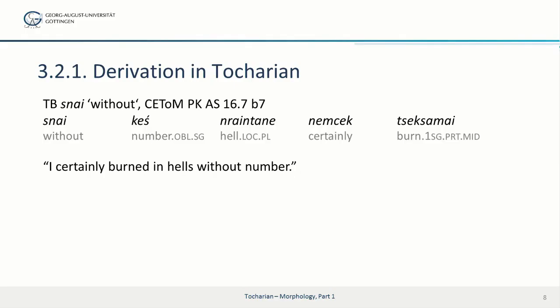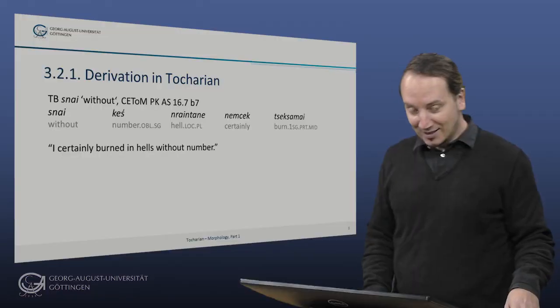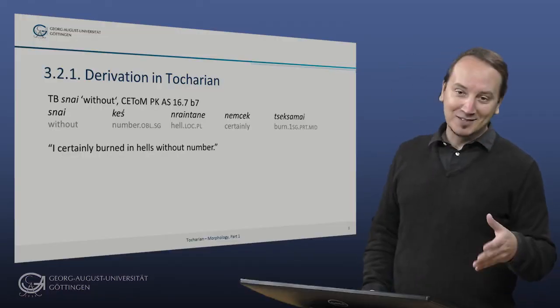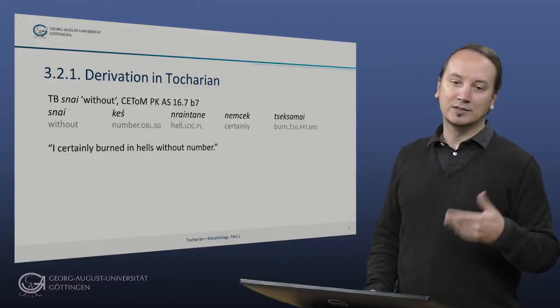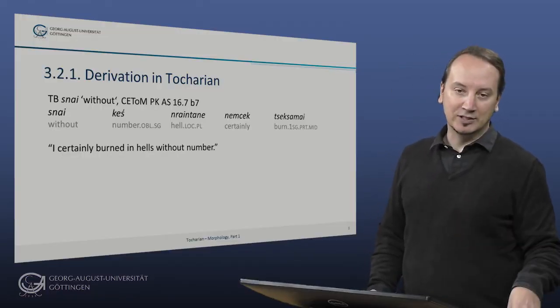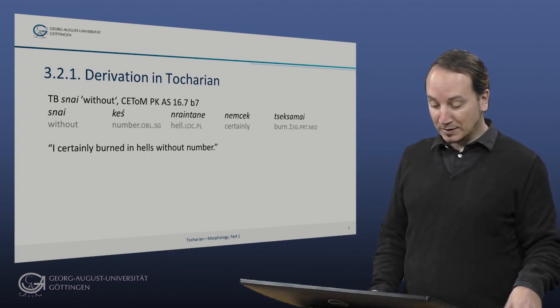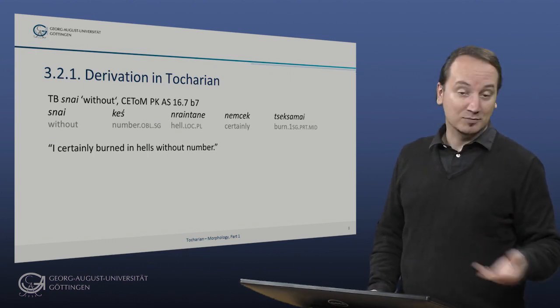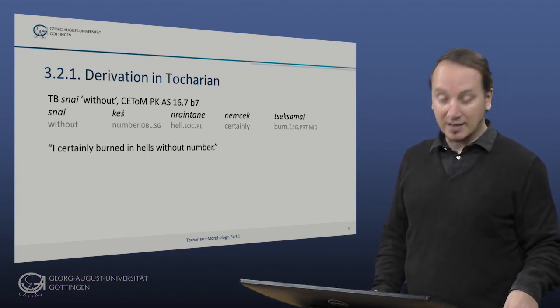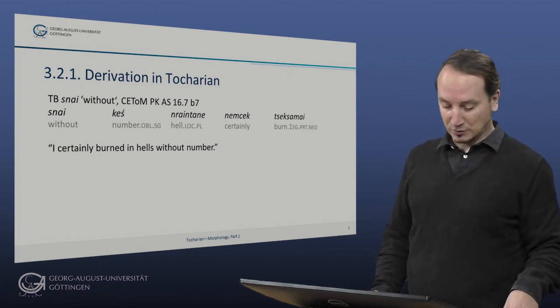The first passage is from a Buddha-Stotra, a hymn to the Buddha: 'sneikesh nreintane nemchek zek sammai' — 'I certainly burned in hells without number.' Here 'sneikesh', meaning 'without number' or literally 'countless', nicely exemplifies 'snei' as a preposition.